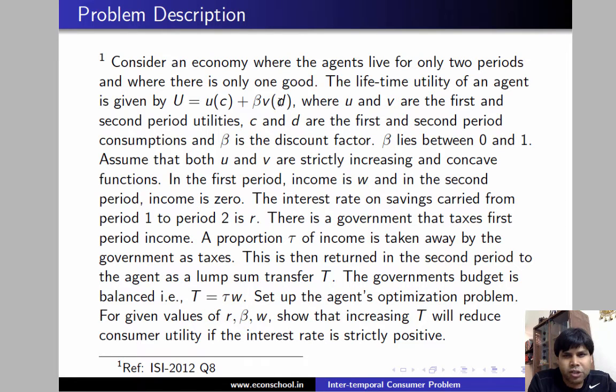The interest rate on savings carried from period 1 to period 2 is R. There is a government that taxes first period income. The proportion tau of income is taken away by the government as taxes. This is then returned in the second period to the agent as a lump sum transfer capital T. The government budget is balanced, that is T equals tau W.